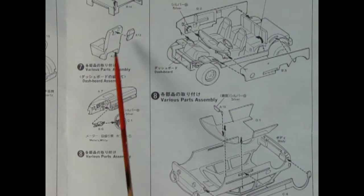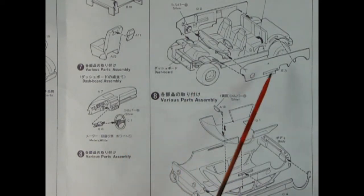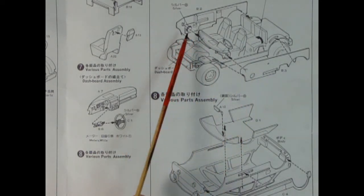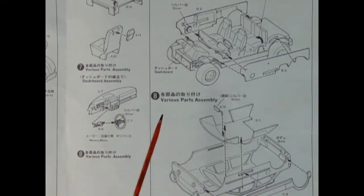The model also includes these nice bucket seats with individual headrests, a dashboard with a steering column and a separate steering wheel, and then separately molded side panels so you can get in there and put in all the nice bare metal foil detail and all the rest.